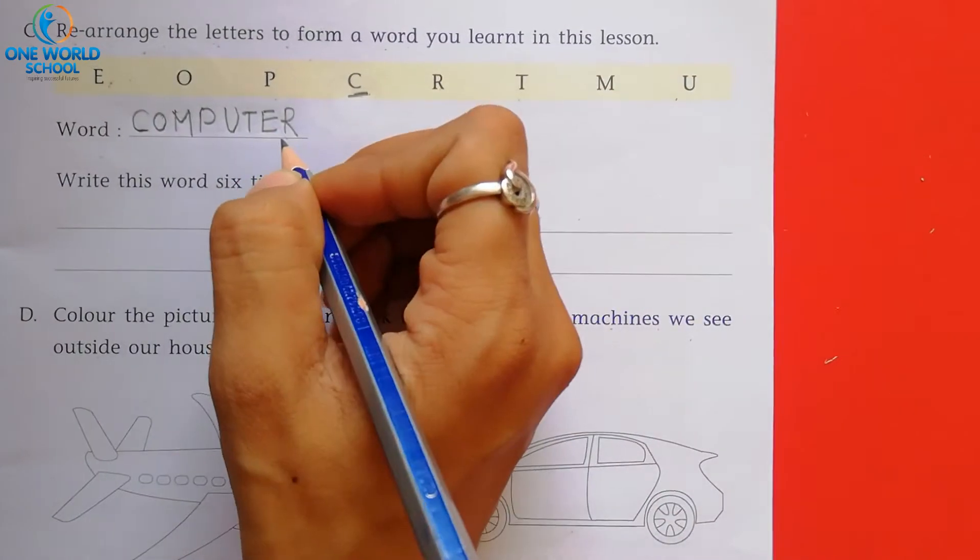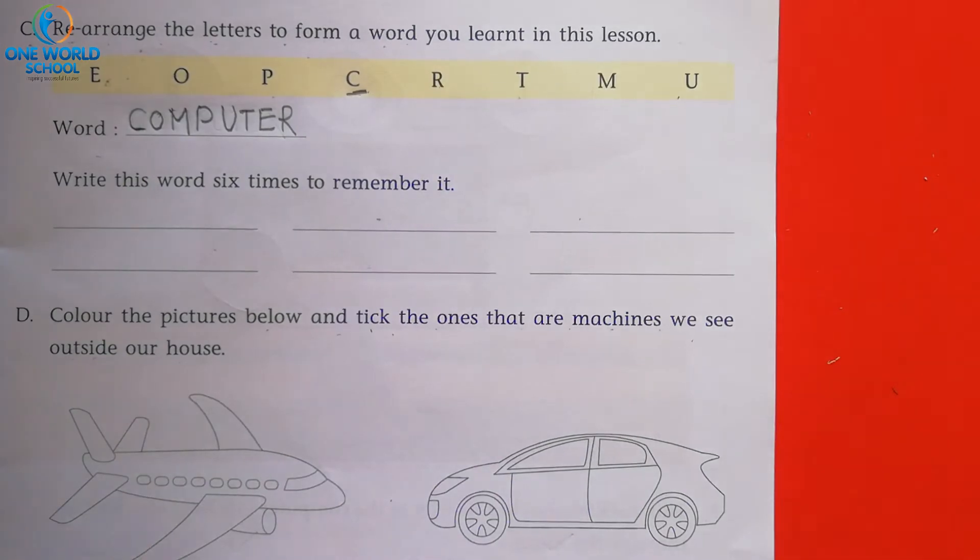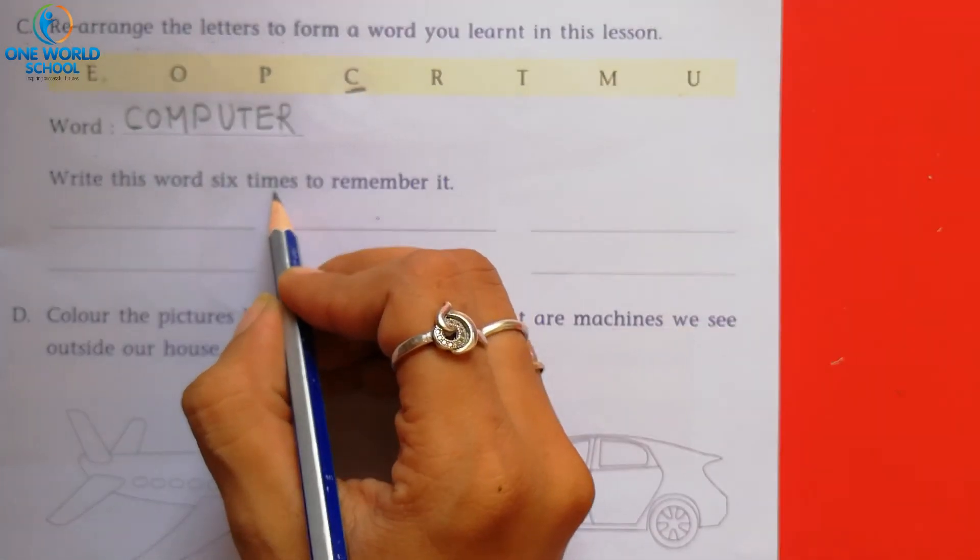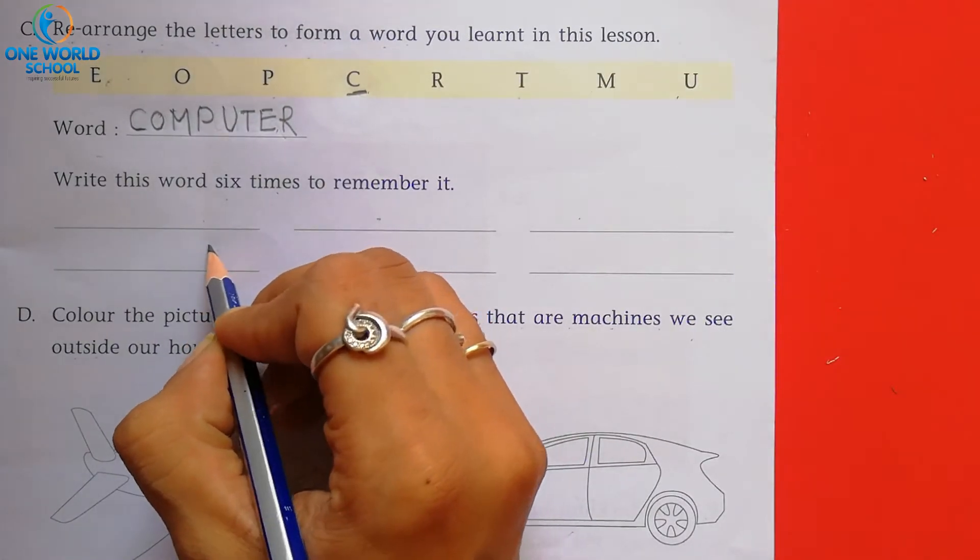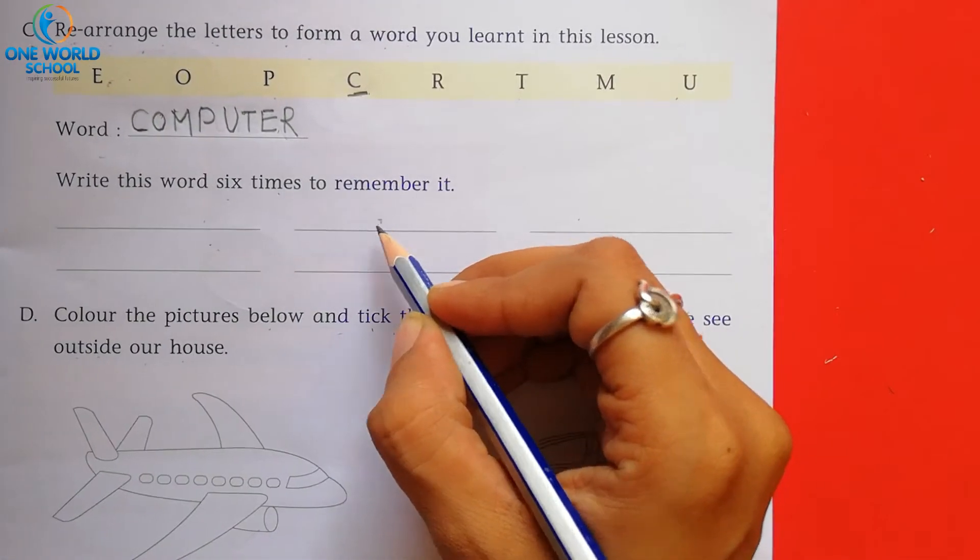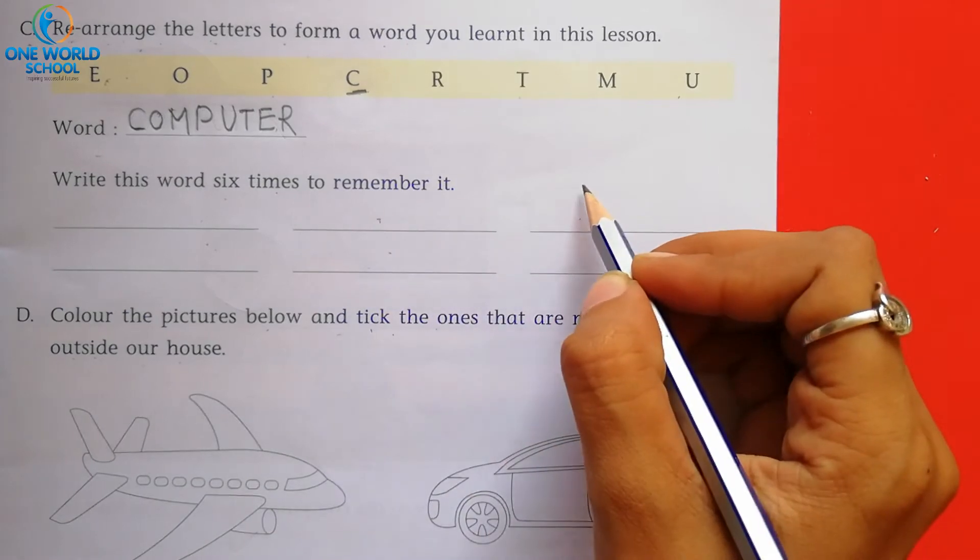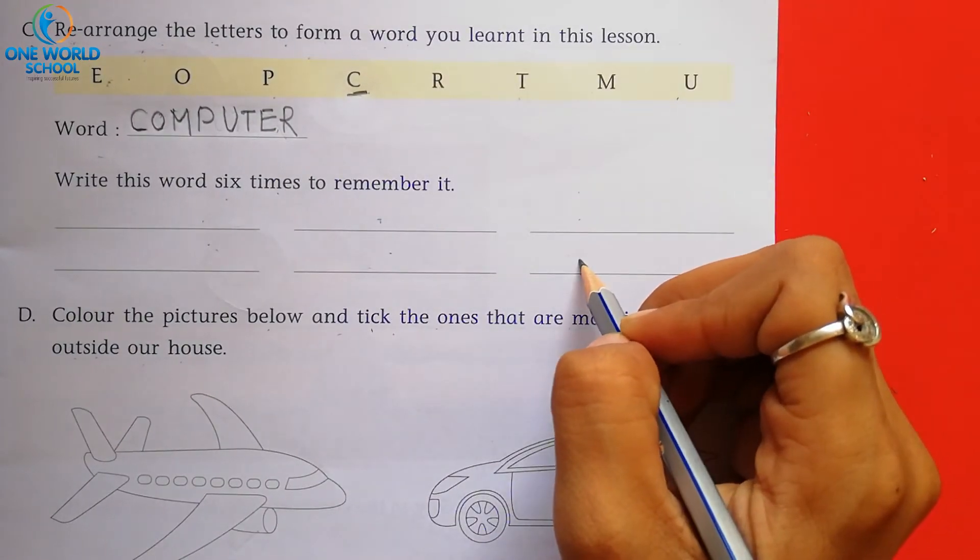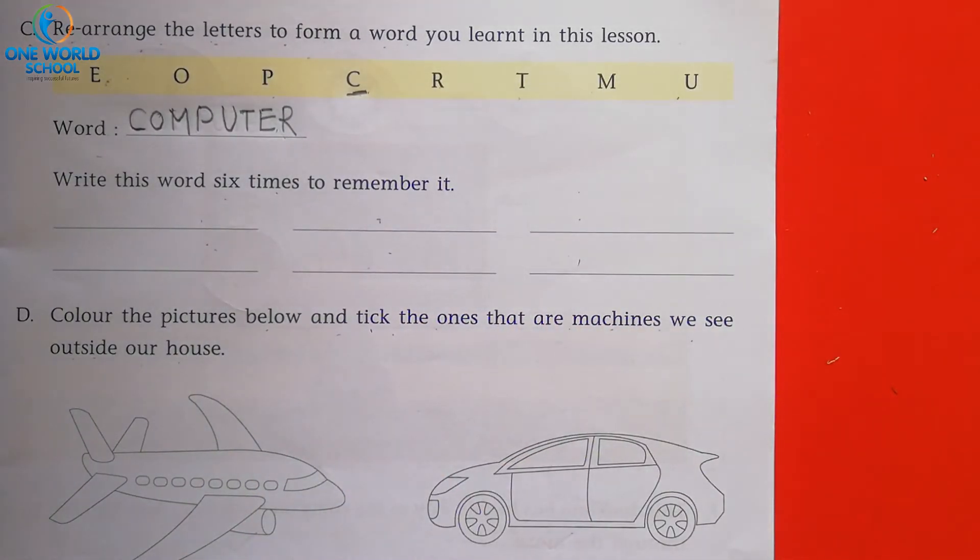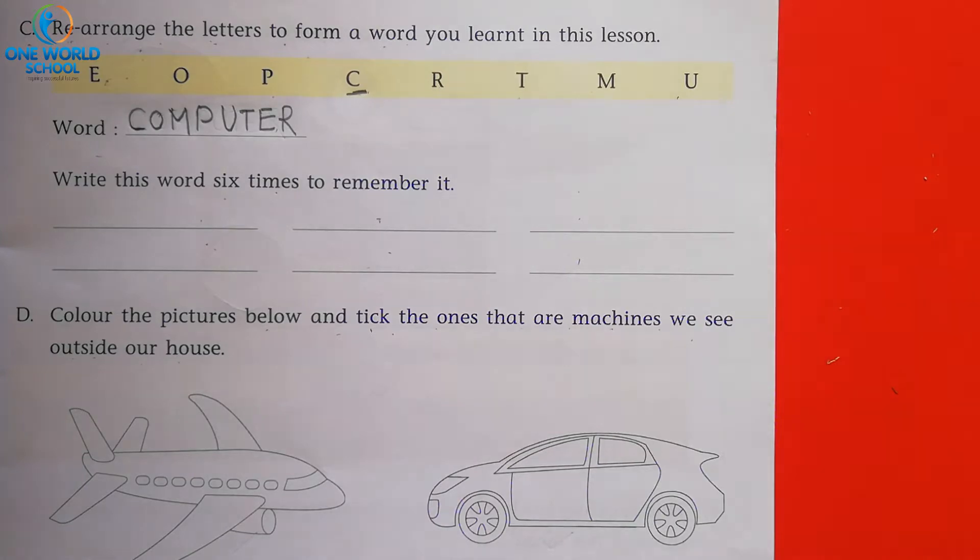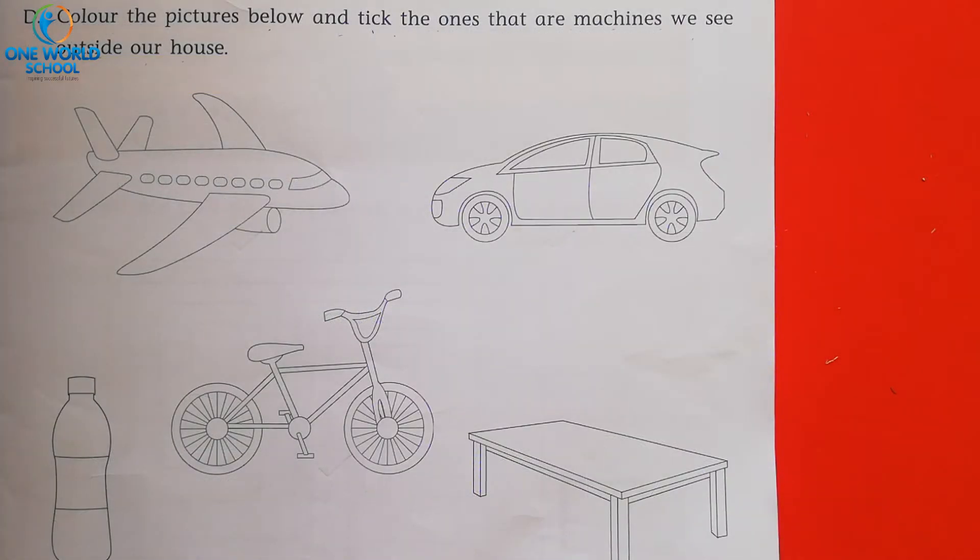Computer. Now what you have to do? You have to write 6 times computer word here. 1 time, 2 time, 3rd time, 4th time, 5th time and 6th time. You have to write 6 times this word. You have to copy down here. Okay. So let's go. Copy down all of them.